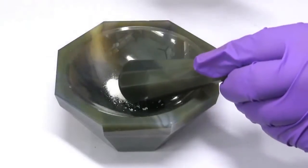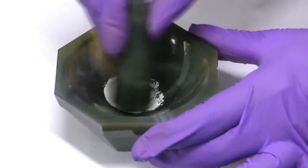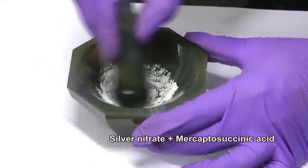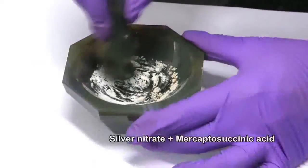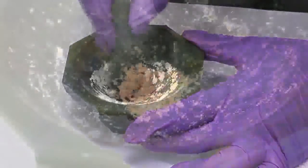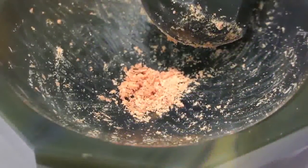A thiol mercaptosuccinic acid was added next and the mixture was ground well. The colorless sample got converted to an orange colored material. This is silver thiolate.